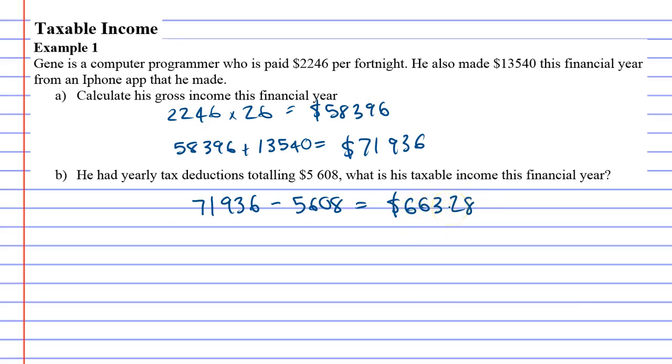The tax office is going to tax him as if he earned $66,328.